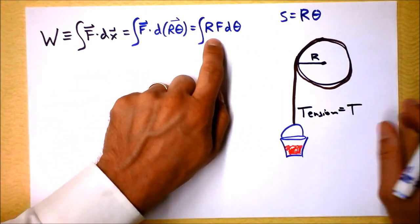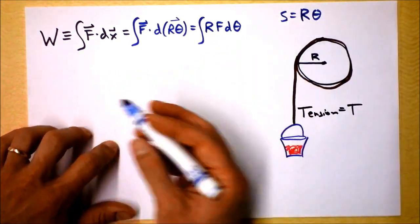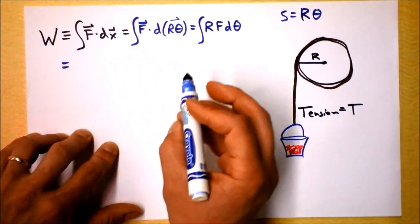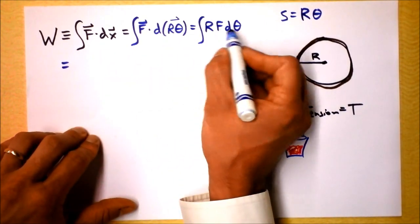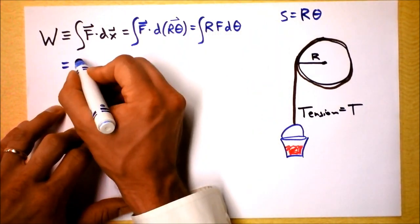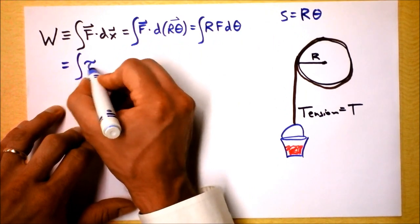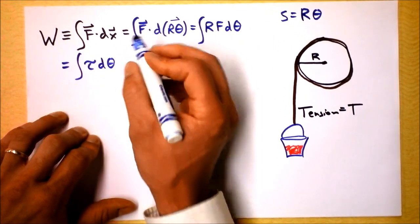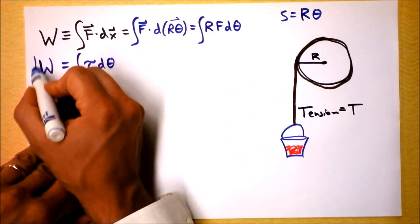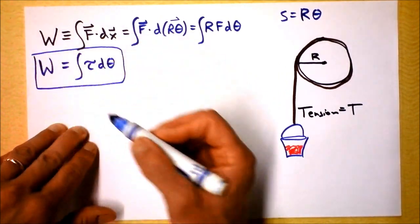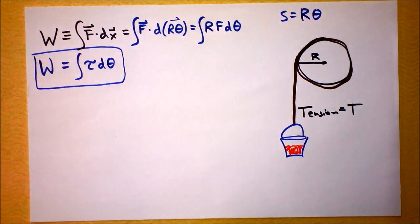I'm going to pull out an R, and now it's going to be R times F dθ. Interesting. Have you ever seen that R times F construction? I have. Check it out: for circles, R times F is actually torque.